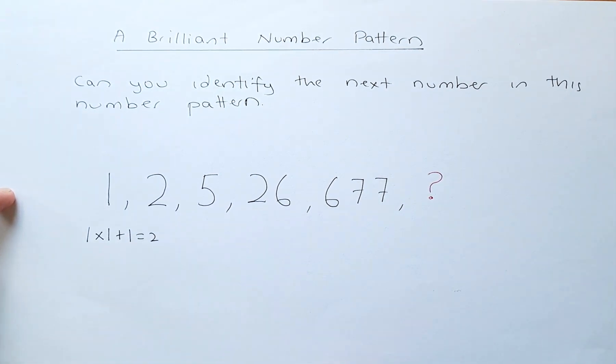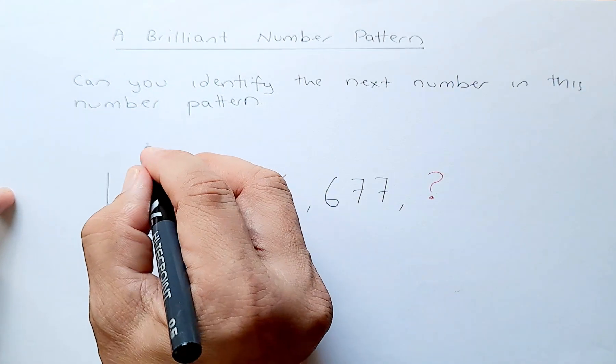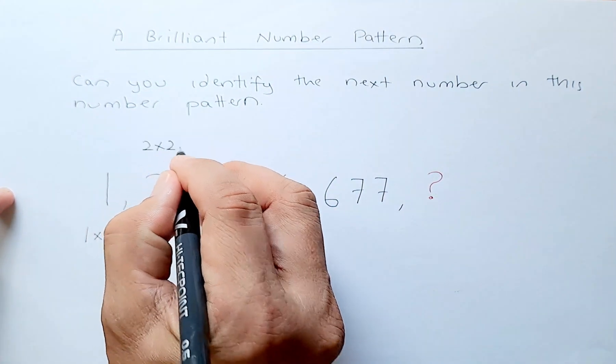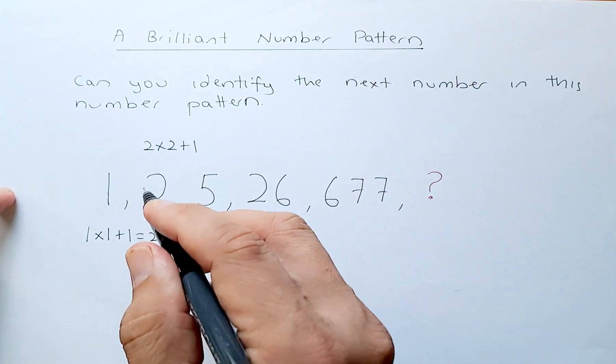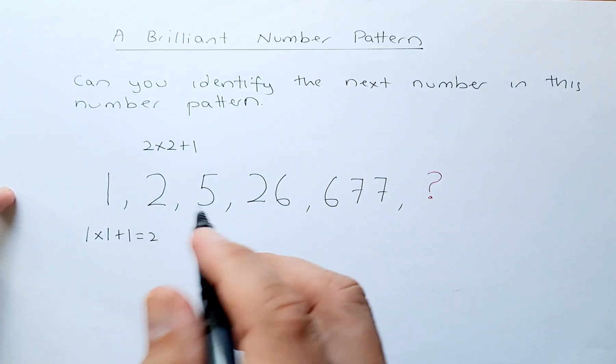So the next number is 2. From 2, they are going to do the same thing: 2 multiplied by 2 plus 1. So 2 multiplied by 2 is 4, plus 1 is 5.